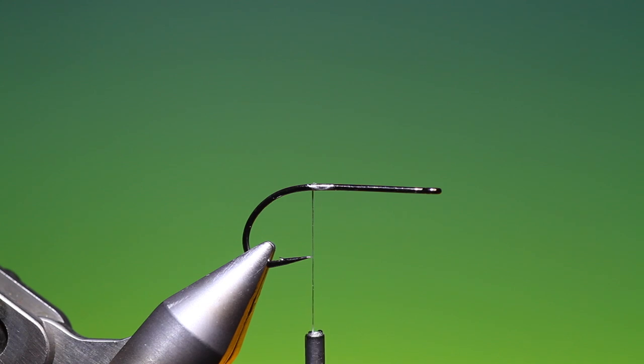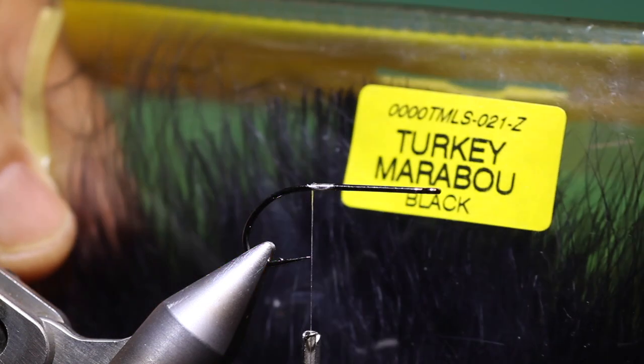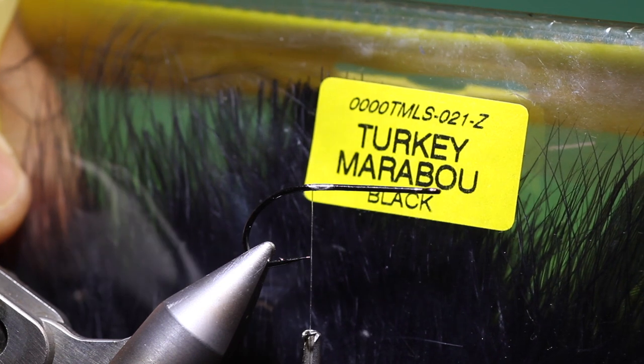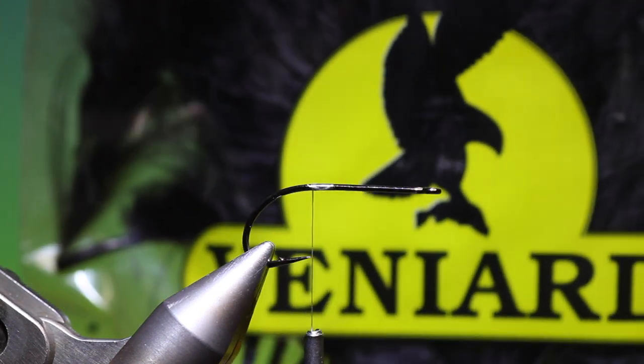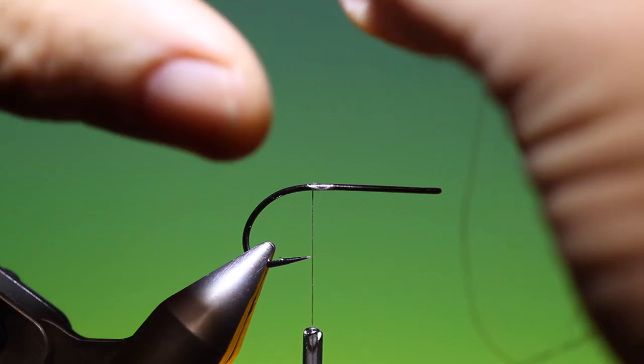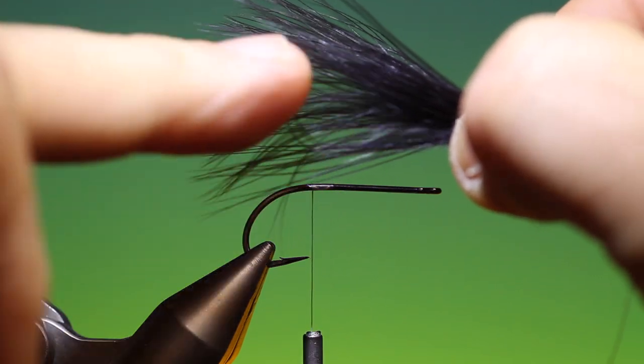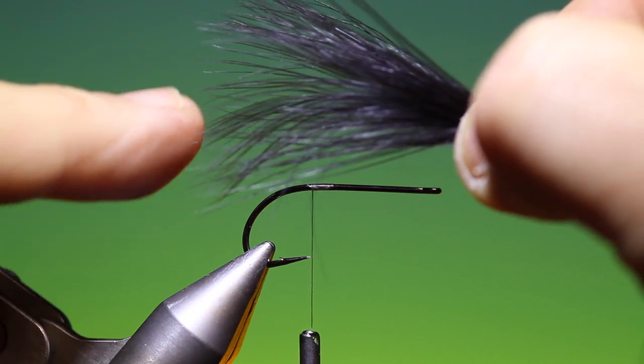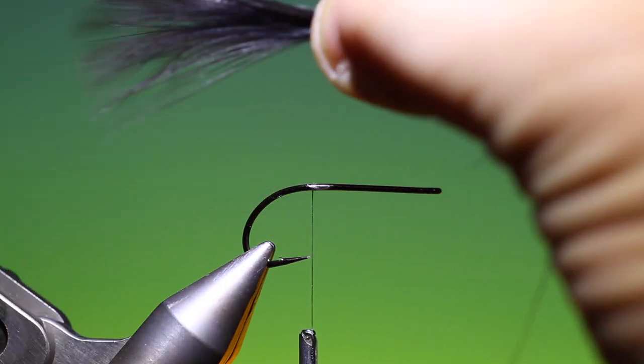So what we want now is some turkey marabou black. I want a little plume. I like to use the tips of a marabou plume with nice tapered tips.